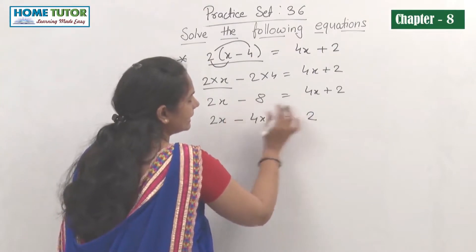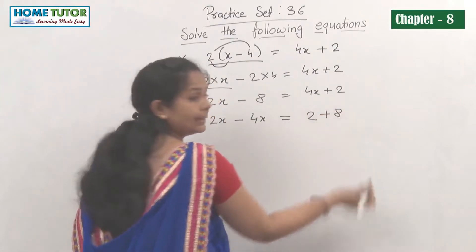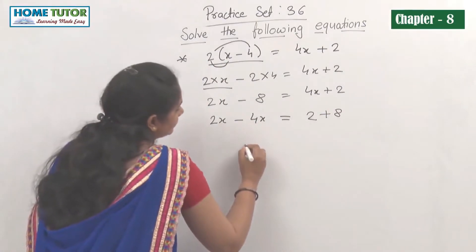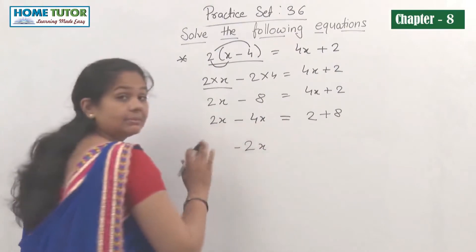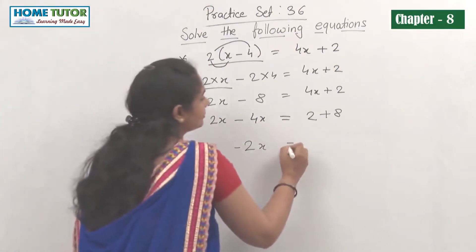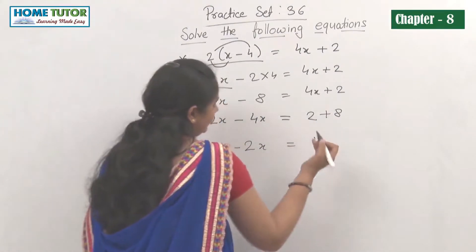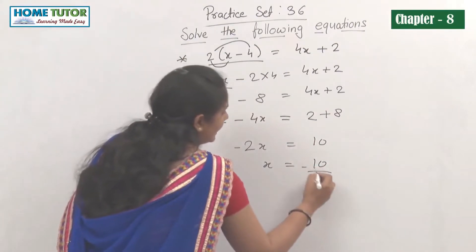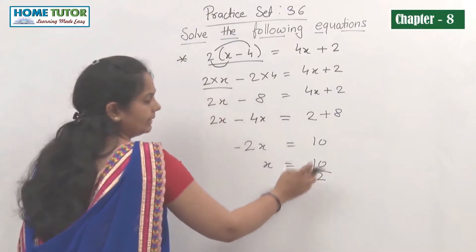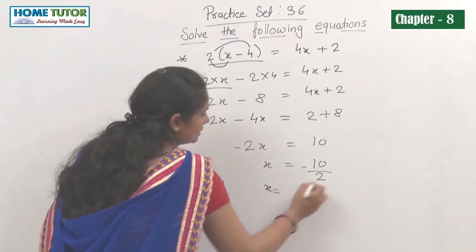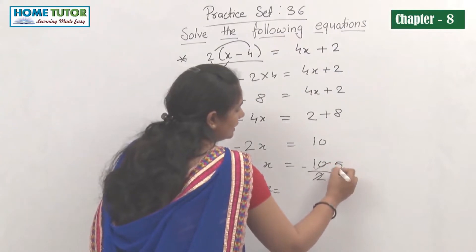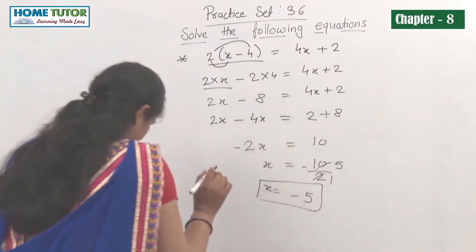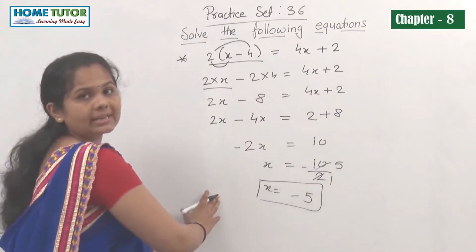The minus 8 moves to the right and becomes plus 8. So minus 2x equals 2 plus 8, which is 10. Therefore x equals 10 divided by minus 2, giving x equals minus 5. The value of x is minus 5.